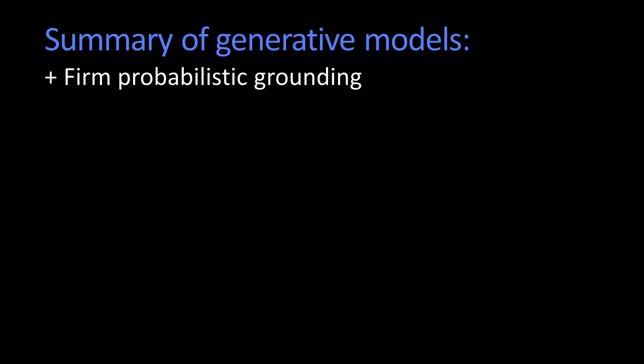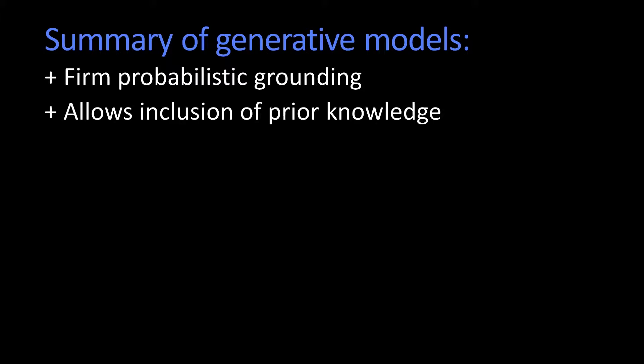But it has a firm probabilistic grounding. It allows you to use your priors. So if you have priors, maybe your context gives you a prior — I know that I'm in a bedroom, so the probability of seeing a lamp is a lot higher than if I'm in a garage. So I can have a prior built into it.